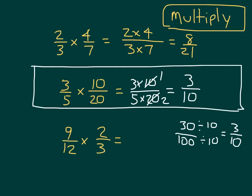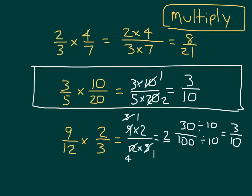For the final problem, we have nine-twelfths times two-thirds. To solve that, let's put this within one fraction: nine times two in the numerator, and twelve times three in the denominator. We can cancel the three for it to become a one, then the nine would become a three. We could cancel again — the three becoming a one and the twelve becoming a four — and then one times two is two, and four times one is four. Divided by two, divided by two, equals one-half.